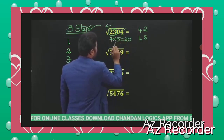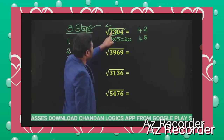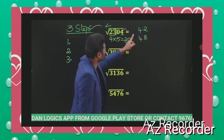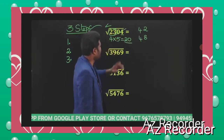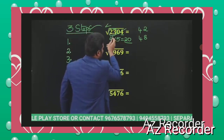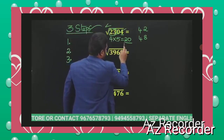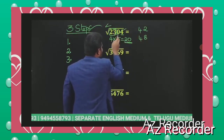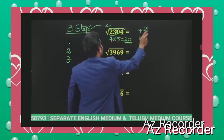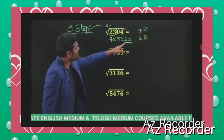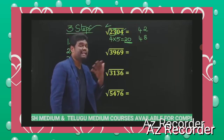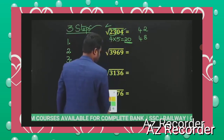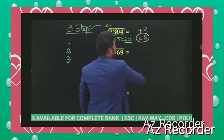Now observe: if our number is less than this product, our answer should be the smaller value; if our number is greater than this product, our answer should be the bigger value. Is 23 less than 20 or greater than 20? Greater than. So our square should be the bigger square, which means the answer is 48.